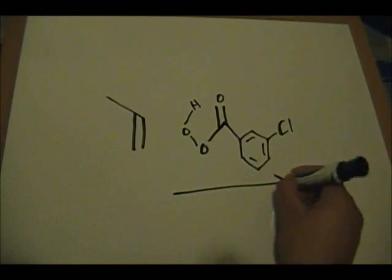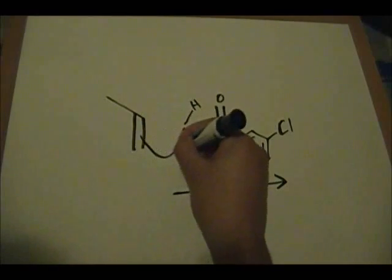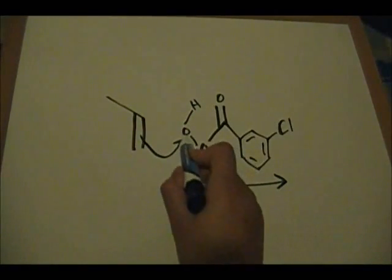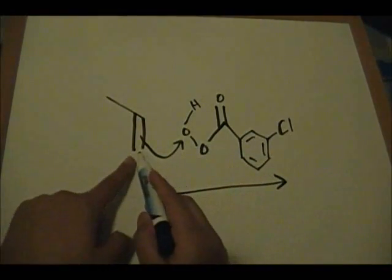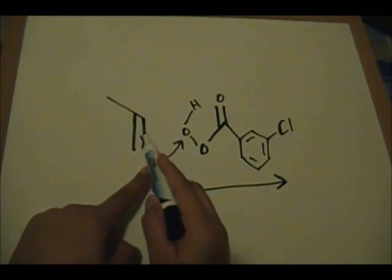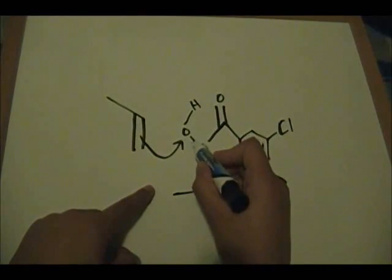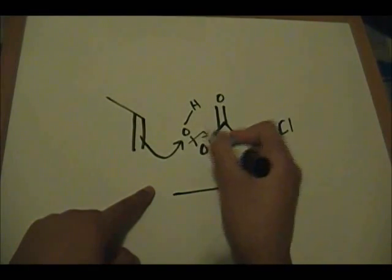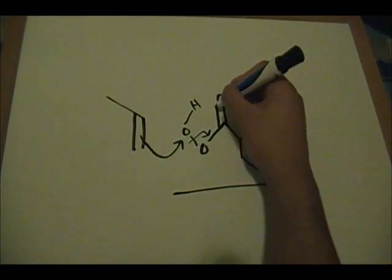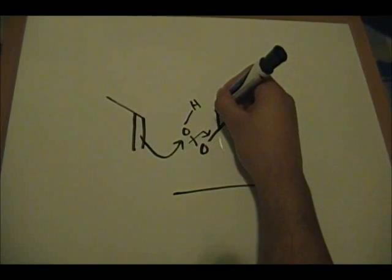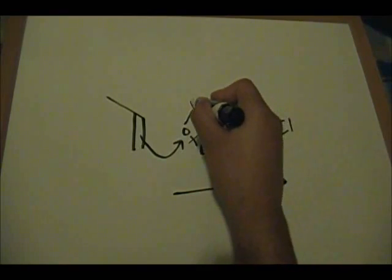So what happens in this reaction is that your alkene attacks this oxygen here, so it singles out one of the oxygens and it's always this one here. What happens next, so you form a bond between this carbon and this oxygen using the pair of electrons here. Now what happens is that you kick off this pair of electrons here, over here, to form a double bond between this oxygen and this carbon while kicking off this pi electrons here to form a bond between this oxygen here and this hydrogen.